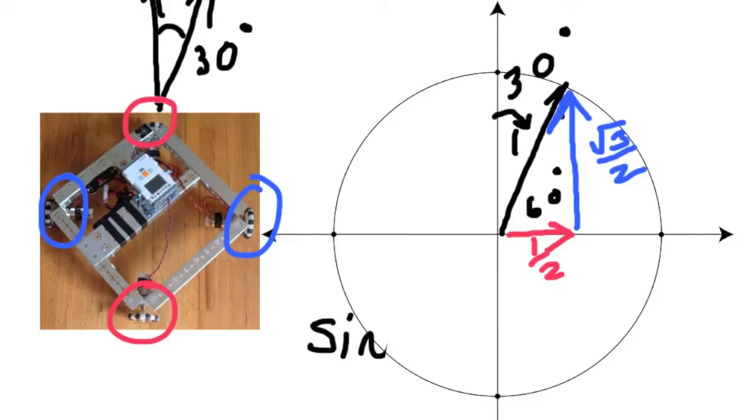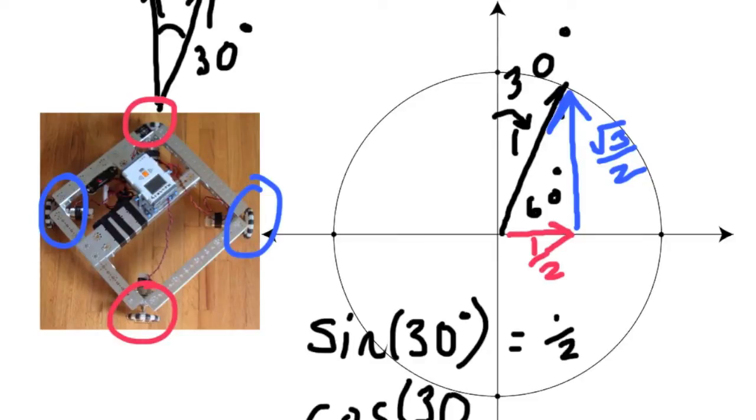Now we have trigonometric functions to figure this out for us so we don't need to draw the unit circle over and over. The sine of 30 degrees is 1 half and the cosine of 30 degrees is the square root of 3 over 2.